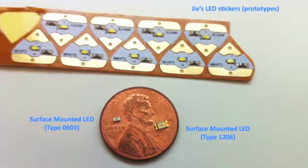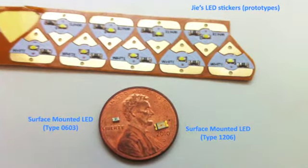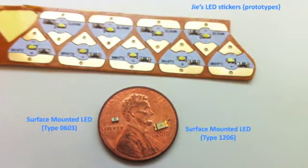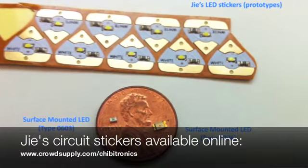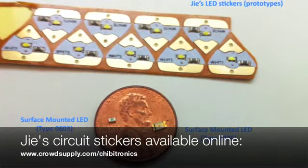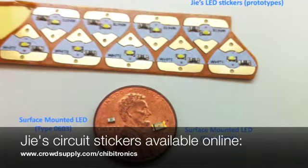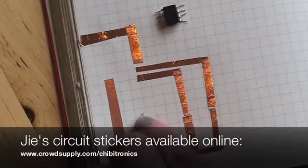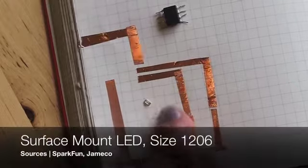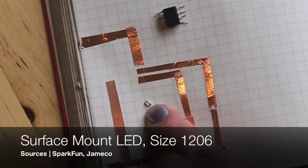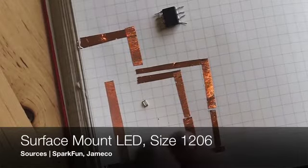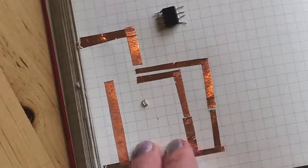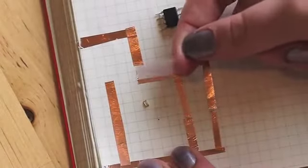In the other videos, I've been using Chibitronics circuit stickers, which are an easy way to incorporate lights into paper circuitry. But since those aren't immediately available - you can pre-order them right now on CrowdSupply - you can still use more traditional surface mount components. So this here is a surface mount LED. On our website, if you go to the paper circuitry materials, you can see what kind we've been using. It's super flat, and all you need for it to go on your circuit is a piece of tape.